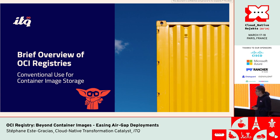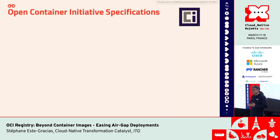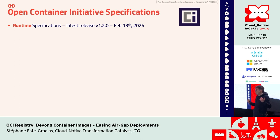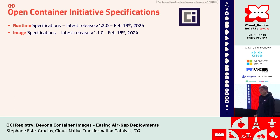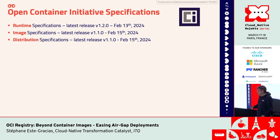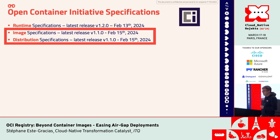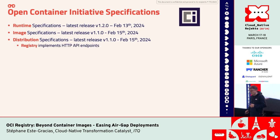Let's first have a brief overview of OCI registries and the usual use case to store container images. OCI means Open Container Initiative, and there are three specifications that define how container technologies work. First, the runtime specification defines how the container operates. Then we have the image specification that defines how images are organized. And finally, the distribution specification defines how to serve these images. These image and distribution specifications have been updated recently to promote the use of something other than container images.